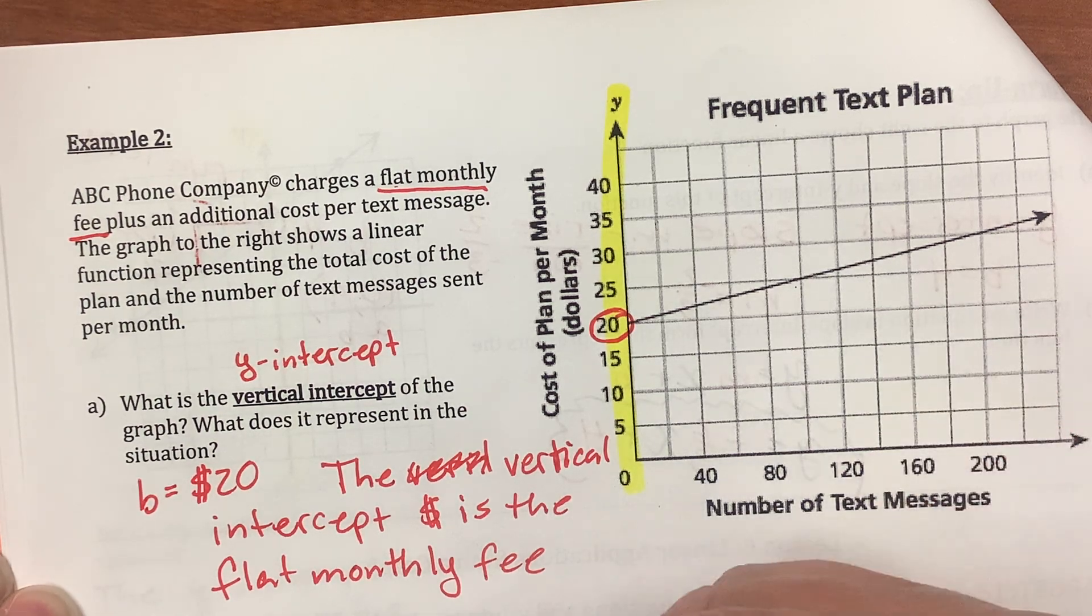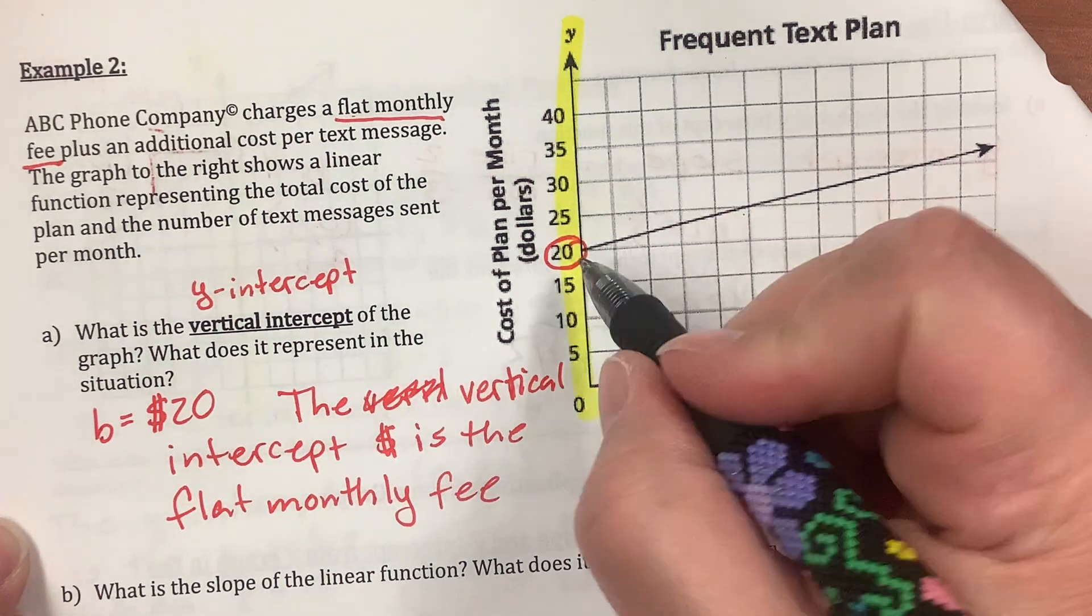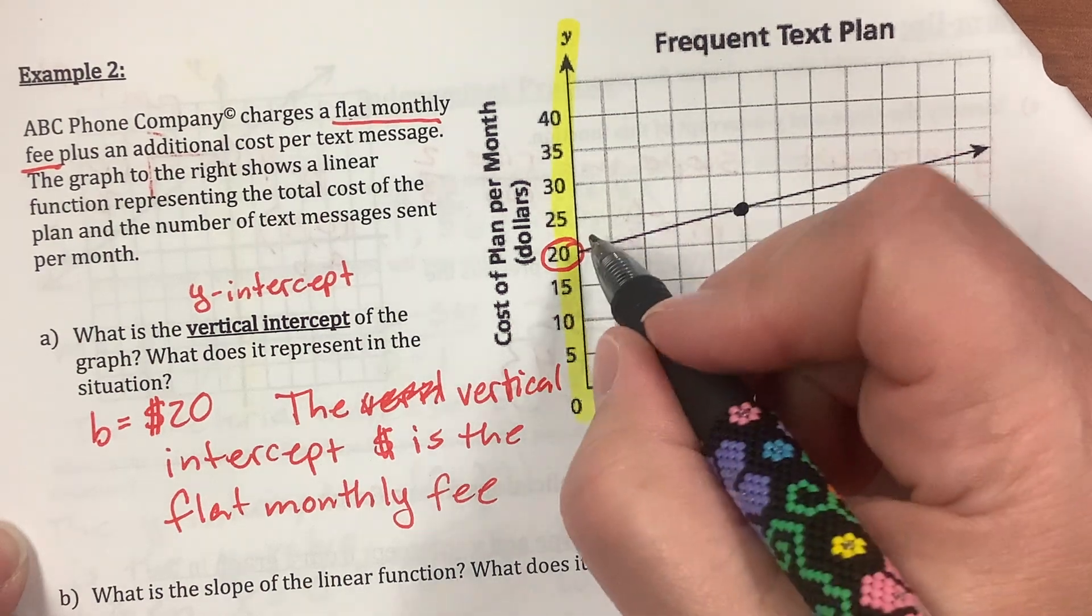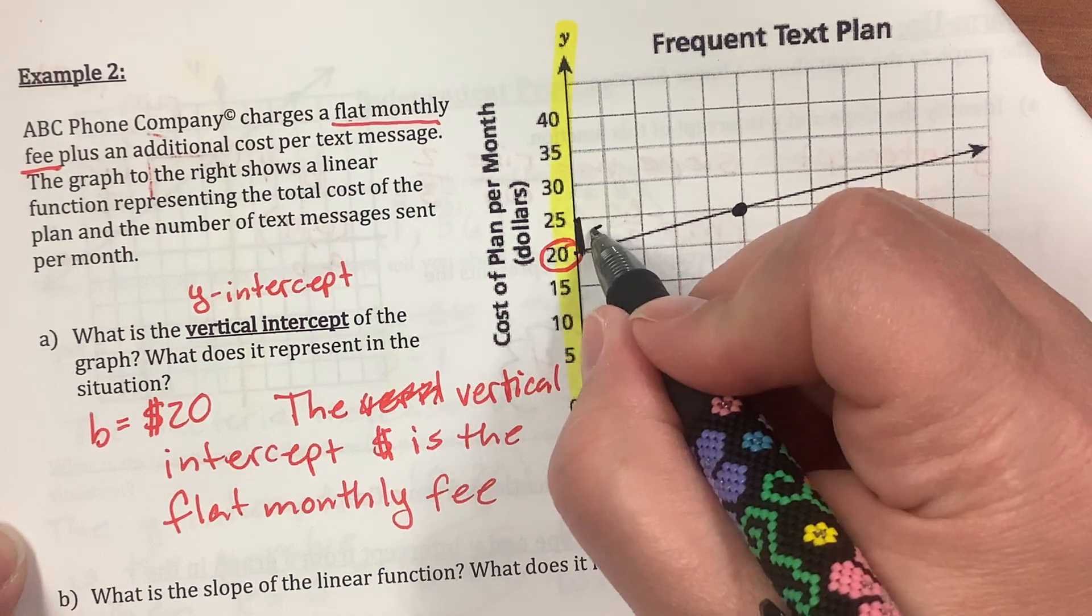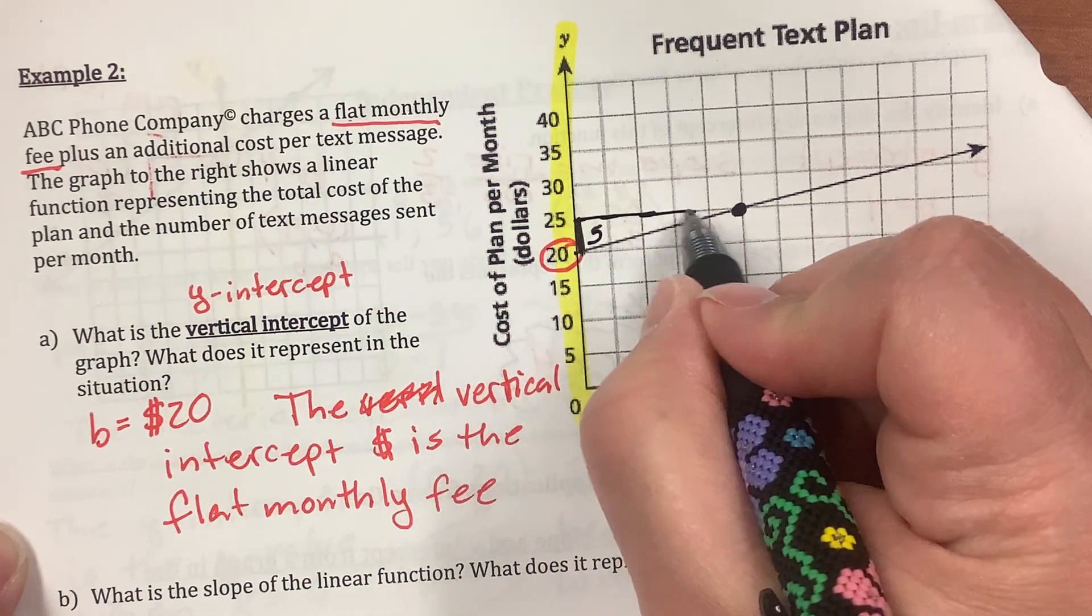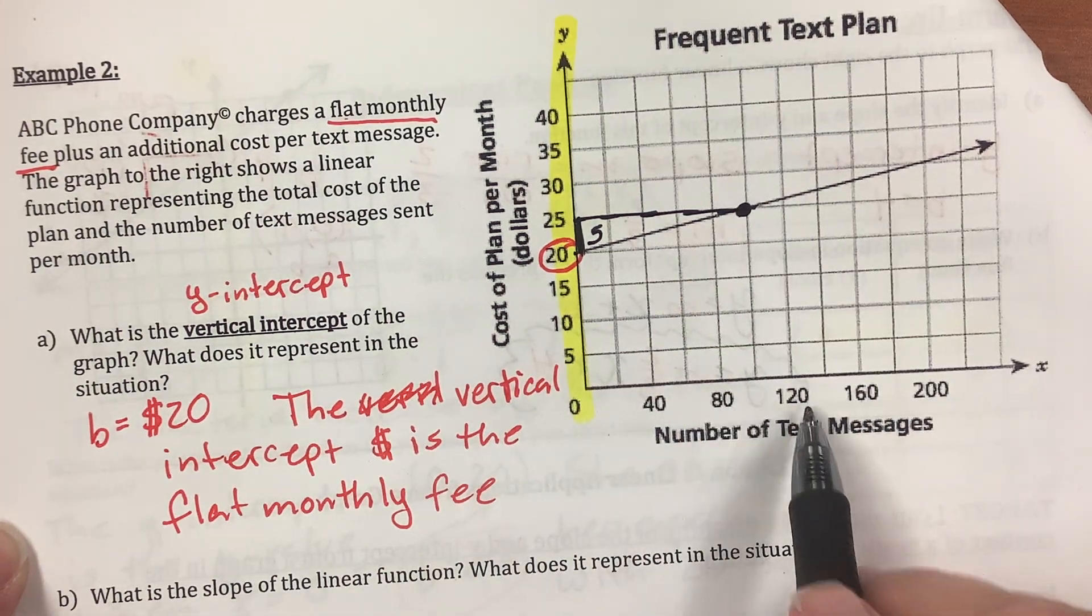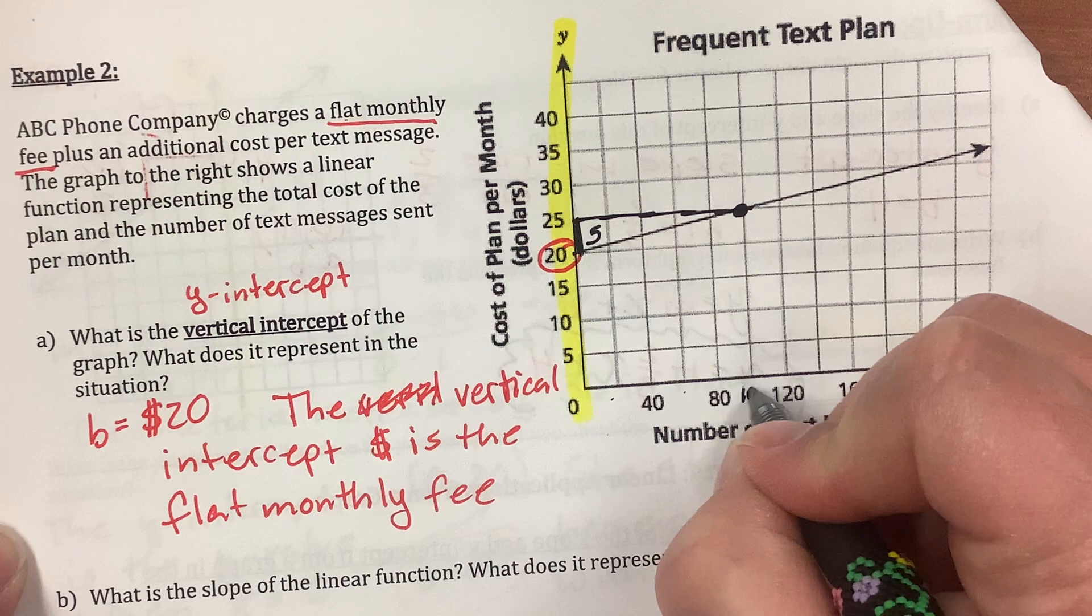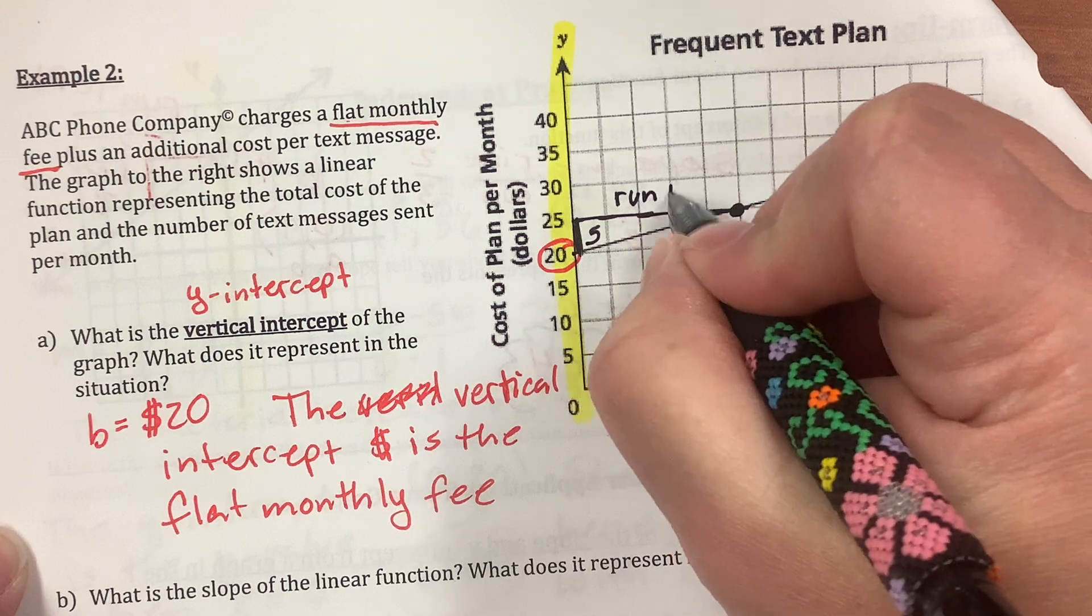And now I need to know what is the slope of my linear function. Rise over run. Well, I'm going to find two points. I'll take this point and say I like this one. That's easy. So, my rise is what? 5. To get from 20 to 25, I rise 5. And then my run is going to be, it's between 80 and 120. So, this is 20, 40, 60, 80, 100.